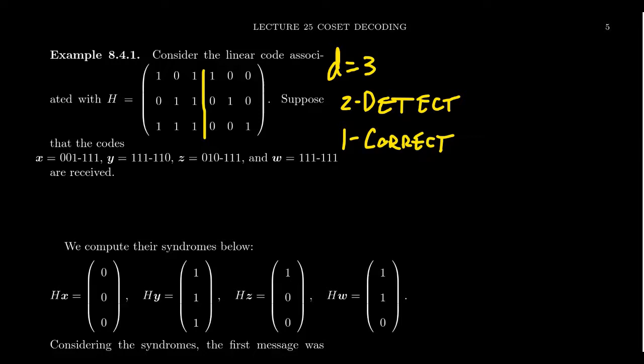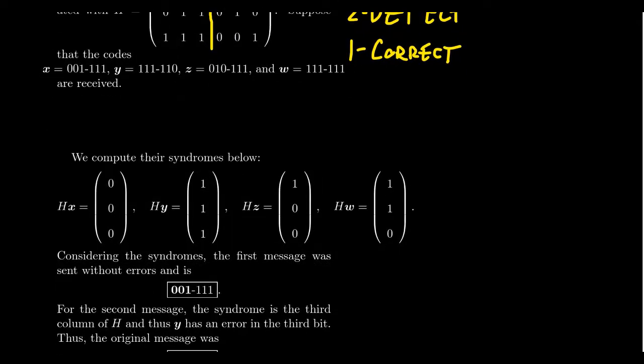So imagine the following four messages are received. So we receive X, which is 001111. We receive Y, which is 111110. We receive Z, which is 010111. And we receive W, which is 111111. Okay, how do we detect these errors if there are any? Maybe there's not. Let's calculate each of the syndromes. So we're going to take the matrix H and multiply by each of these words. So if we take H times X, we actually end up with the zero vector. So what that tells us is that since the syndrome is 0, that means that X is in the null space, which is the linear code. And therefore, there is no error. And therefore, the message sent was 001111. So there was no error in there whatsoever, which then we can decode this process. Remember, you erase the last few bits, and the original message was 001. That's what the computer wanted to communicate. There was no error in here whatsoever.